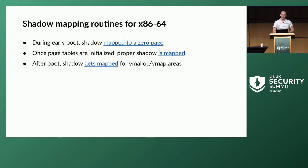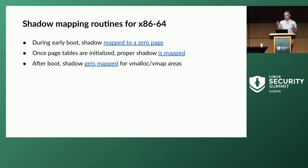Shadow memory is mapped by the kernel, and the mapping procedure is not very straightforward. During very early boot, shadow memory is mapped to a zero page, meaning all kernel memory during early boot is considered fully accessible. After page tables are initialized, the proper shadow is mapped and the kernel can start changing and checking shadow values. The shadow is not mapped for the whole range of kernel memory, but only for parts that actually contain something like the kernel text, fismap, and so on.